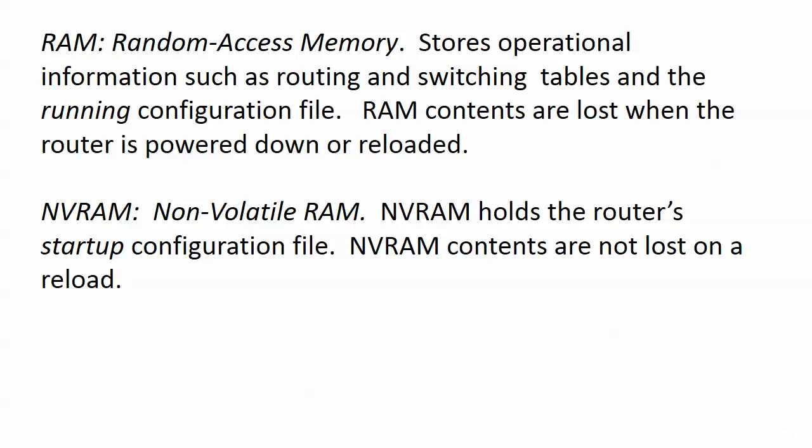Here are the two you've got to watch: RAM and NVRAM. With random access memory, routing and switching tables are kept there — the routing tables, the switching tables, the MAC address tables — along with the running configuration file. RAM contents are lost when the router is powered down or reloaded. By contrast, non-volatile RAM — NVRAM — holds the router's startup configuration file, and NVRAM contents are not lost on a reload.